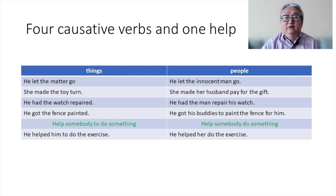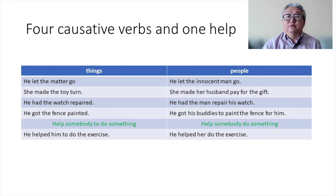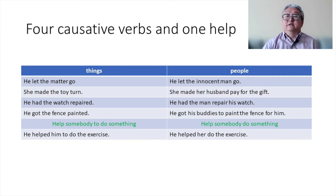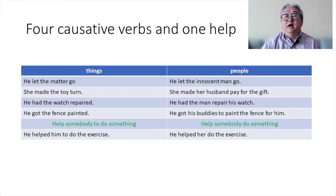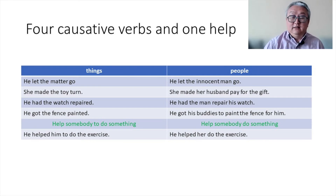'Get' has its own variations too. He got the fence painted — that's like 'have.' But when it comes to a person, it's different — it has to have a 'to': he got his buddies to paint the fence for him. So there are such variations depending on whether it is followed by a person or a thing. And then there's 'help' — 'help somebody to do something' and 'help somebody do something' are the same. Whether it's 'to do' or 'do,' there's no difference. That's how 'help' is different from the rest of them.